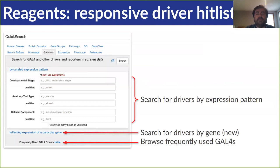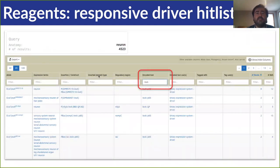We've also implemented these responsive tables for our Gal4 Etc search tool. This tool is available right on the Flybase homepage. It lets you search for drivers based on either expression pattern or gene — and the search by gene is a recent improvement. You can also just browse the most frequently used Gal4 drivers in the table. A search for 'neuron' with this tool returns thousands of results. With the responsive tables, you can start to whittle that down quite easily — for example, typing 'LexA' into the encoded toolbox narrows down the list quite a bit. You can further filter those results based on an anatomical term or regulatory region. So we hope these interactive tables make it easy to sift through all the information we have available.